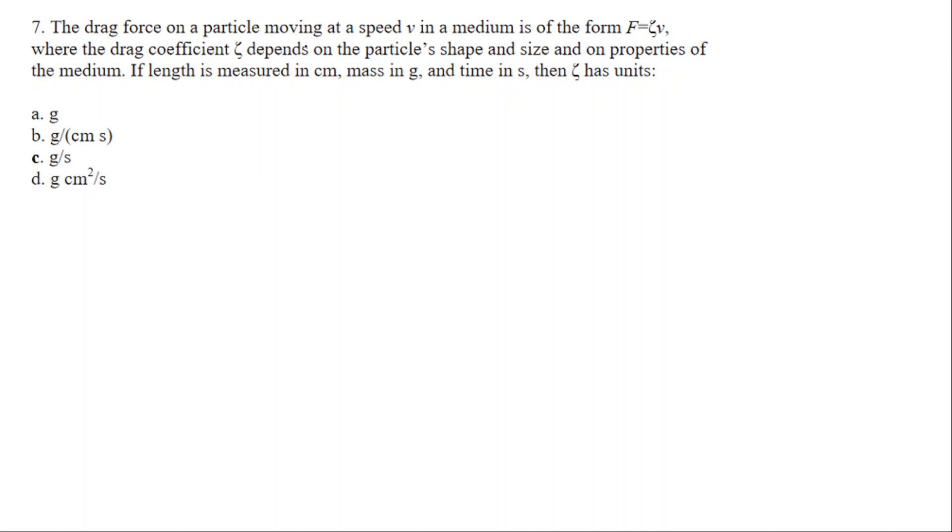The drag force on a particle moving at a speed V in a medium is of the form F = ζV, where the drag coefficient ζ depends on the particle's shape, size, and properties of the medium. If length is measured in centimeters, mass in grams, and time in seconds, then the unit of ζ is: